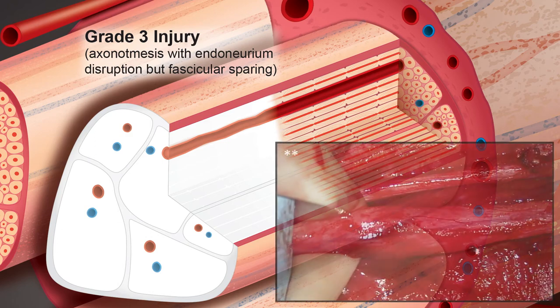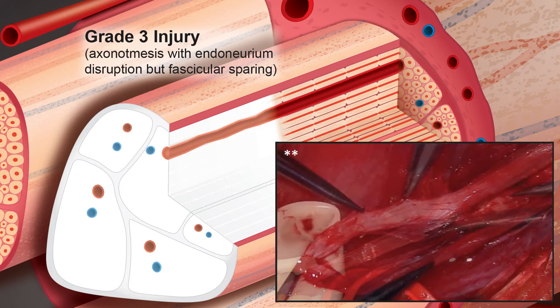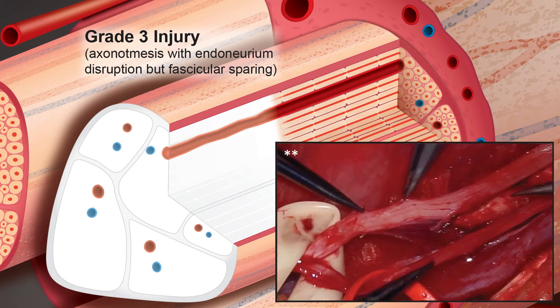Intraoperative microscopy images of a young woman's medial arm sustaining a blunt injury several months earlier, resulting in a clinically complete ulnar nerve injury. Focal neuroma in continuity is observed. Internal neurolysis with epineurotomy and intraneural dissection was performed, revealing fascicular continuity.